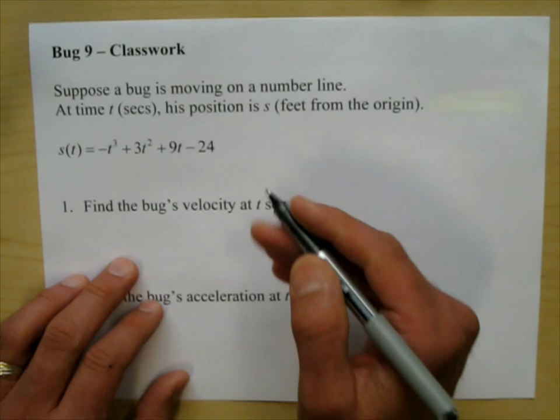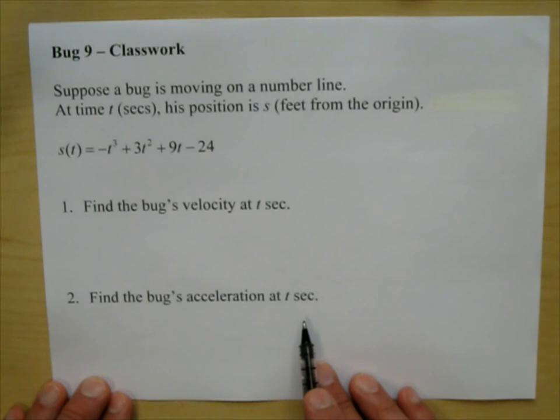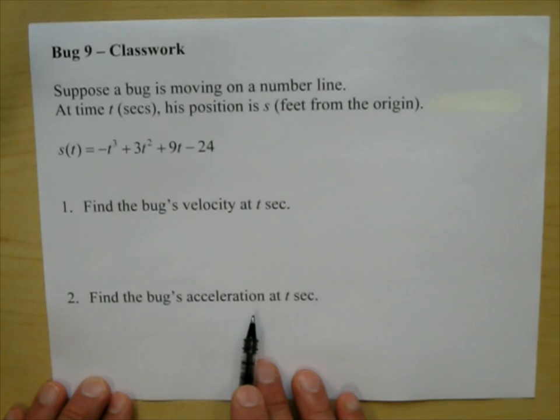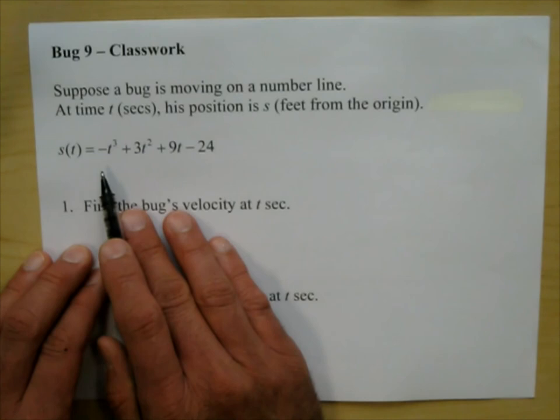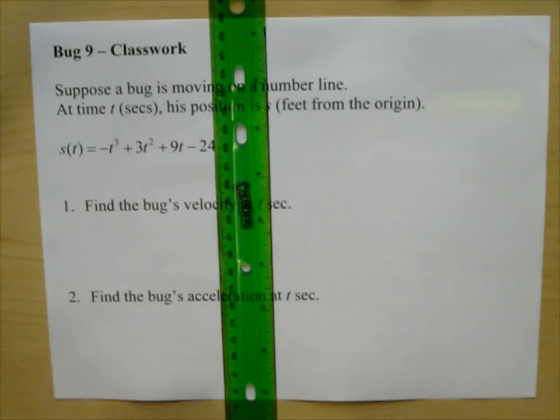Now that we're more comfortable with derivatives, we're going to call the position s, which is maybe what it should have been called from the beginning. This is a polynomial and let's see what the problem is asking us. Find the bug's velocity at t seconds. Find the bug's acceleration at t seconds. So acceleration is a new thing. Let's talk about what happens when you take the derivative — this is going to help us with all rates of change.